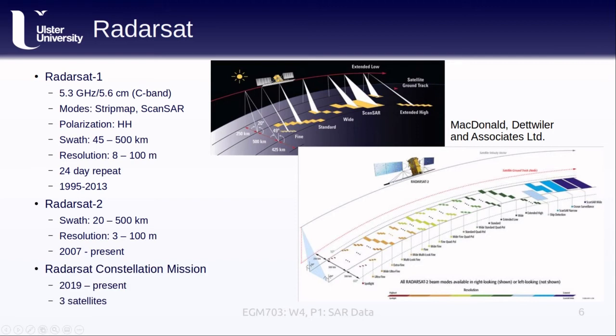Finally, we have the Radarsat-Constellation mission, which is a set of three twin satellites that have the same specifications as Radarsat-2, but the fact that there are three satellites means that there are more acquisitions, greater potential for high temporal repeats, and even better opportunities for topographic mapping. This mission was launched in 2019, and each satellite is expected to operate for at least seven years.